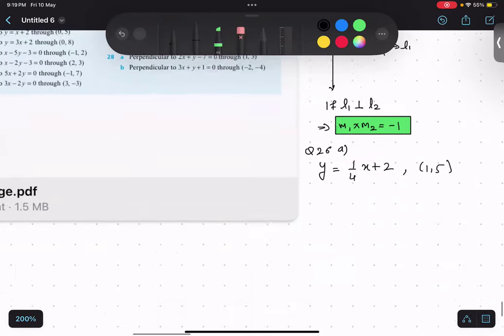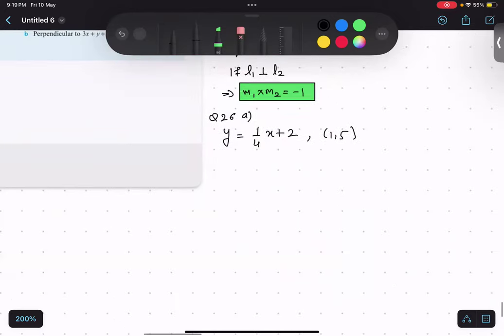So, same steps. I will first of all find m1. Can you tell me what is the slope? That is easy to find. So, 1 by 4, right? Very good. 1 by 4. y equals to mx plus c.